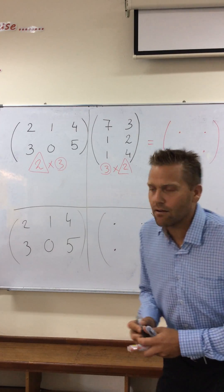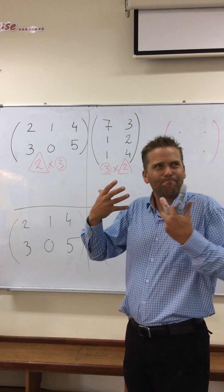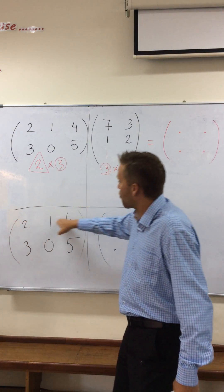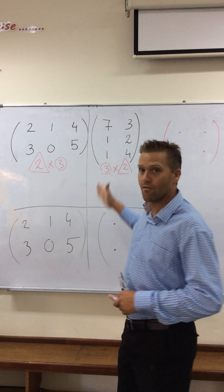Now why do I write it out like this? Because it helps me to remember that for that first matrix I have to go horizontally. And that second matrix I have to go vertically.